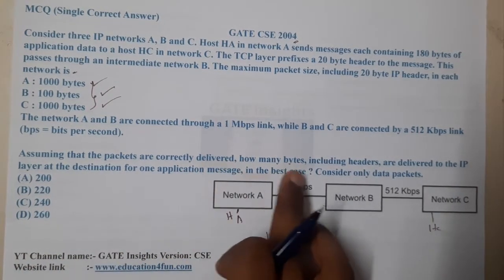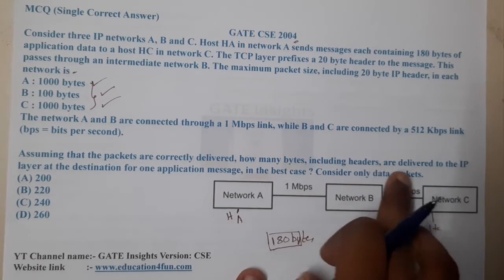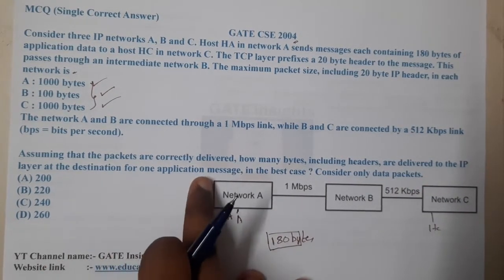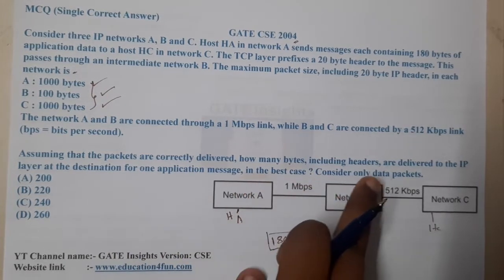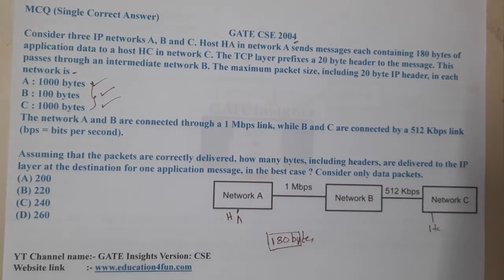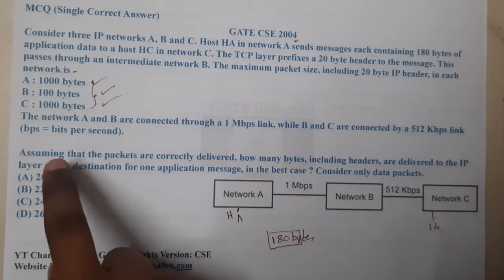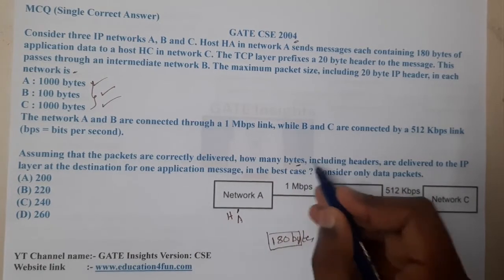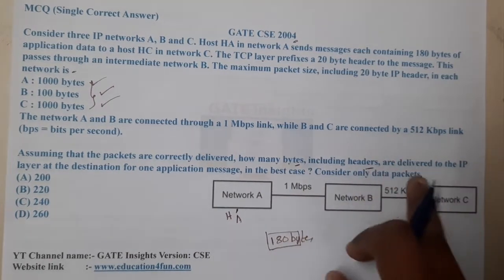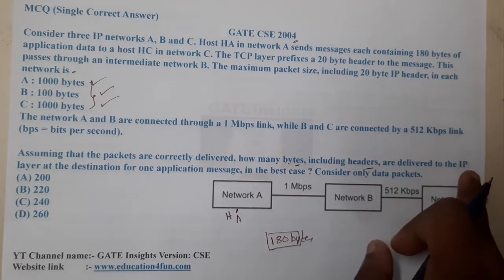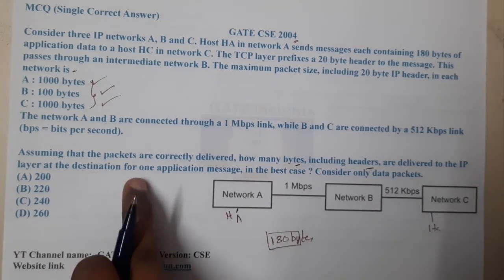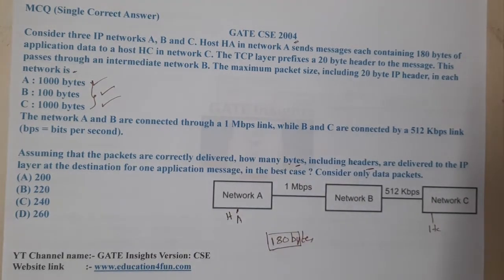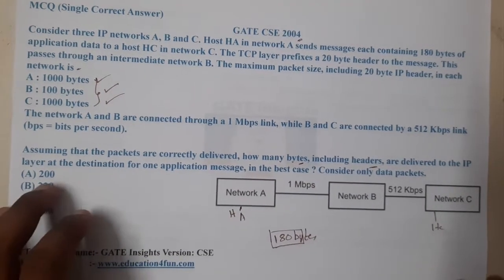The question asks: assuming packets are correctly delivered, how many bytes including headers are delivered to the IP layer at the destination for one application message in the best case? Consider only data packets. So for one application message in the best case, how much total data size is received — that is what they are asking.